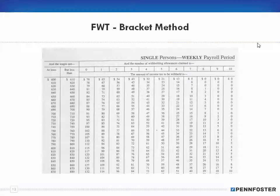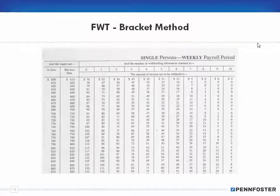Regardless of which method you use, the bracket method and the percentage method can produce different figures. For example, if I'm married with two withholding allowances, I might get a different figure from each method. There's no right or wrong — that's why at the end of the year we file our taxes as a reconciliation. The IRS withholds more than you should have paid, then gives it back based on what you actually owed.